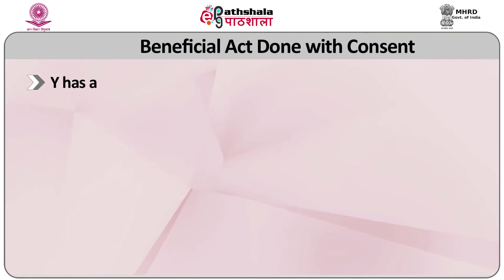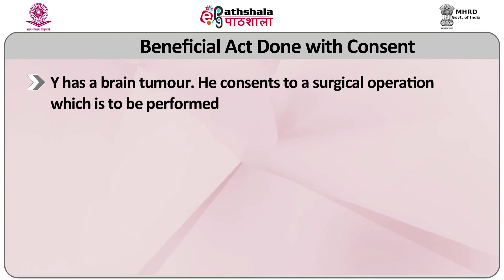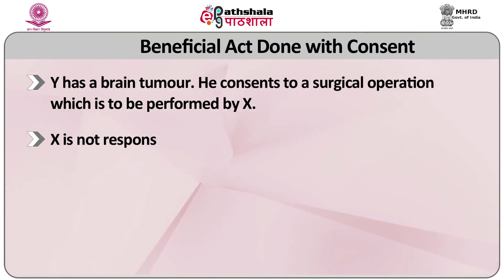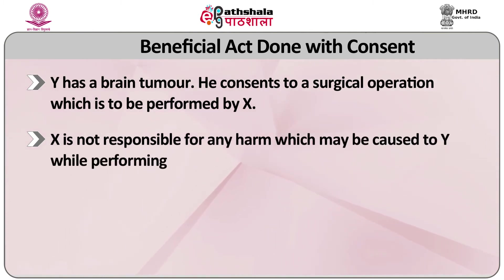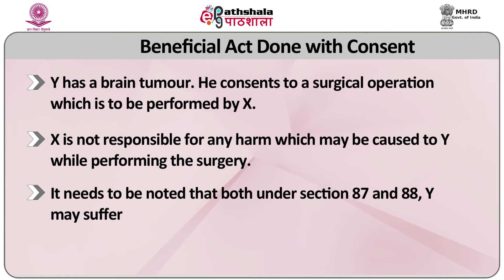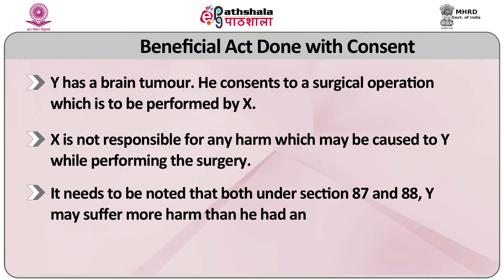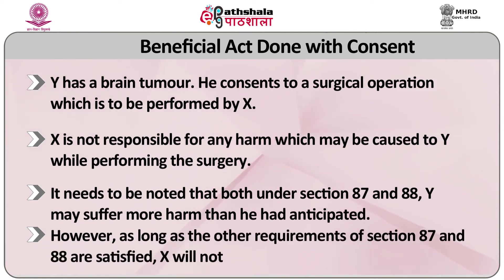Let's consider this example. Y has a brain tumor. He consents to a surgical operation which is to be performed by X. X is not responsible for any harm which may be caused to Y while performing the surgery. It needs to be noted that both under section 87 and 88, Y may suffer more harm than he had anticipated. However, as long as the other requirements of section 87 and 88 are satisfied, X will not be liable.